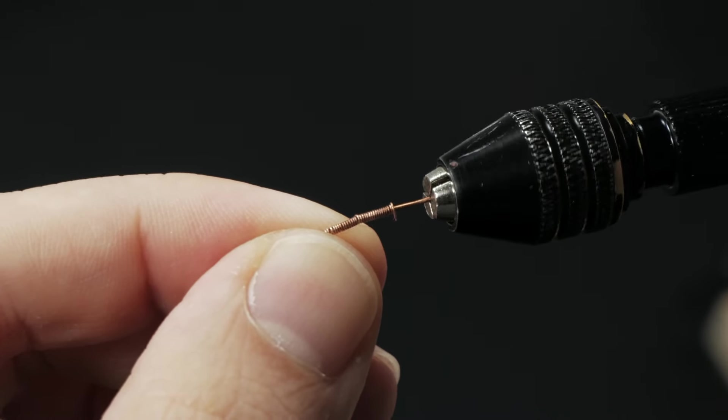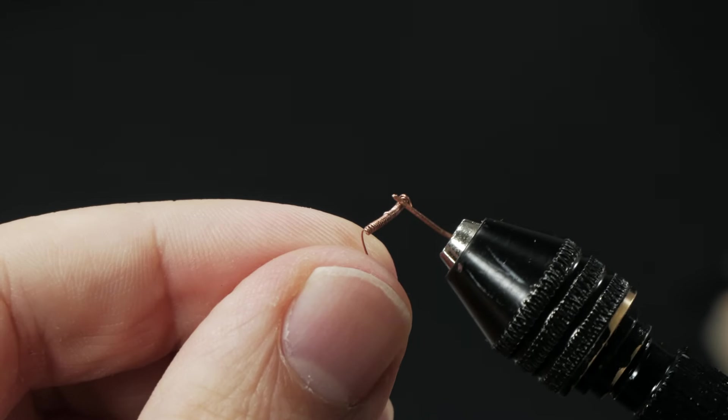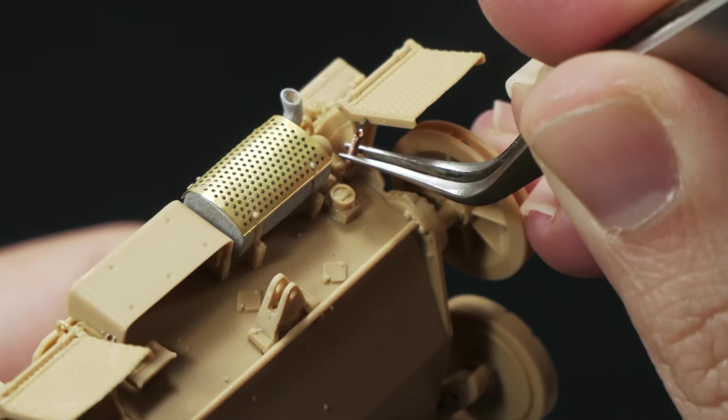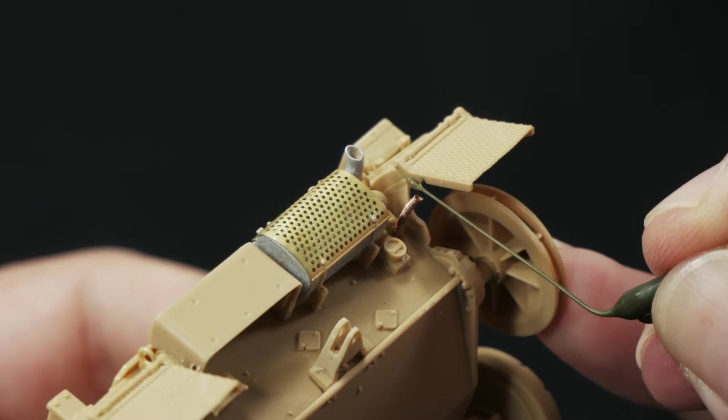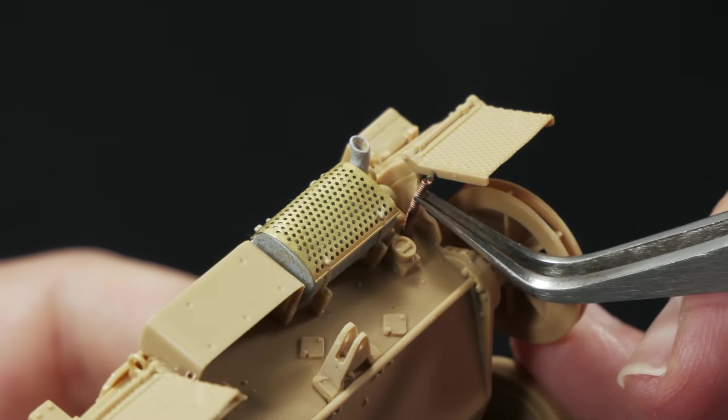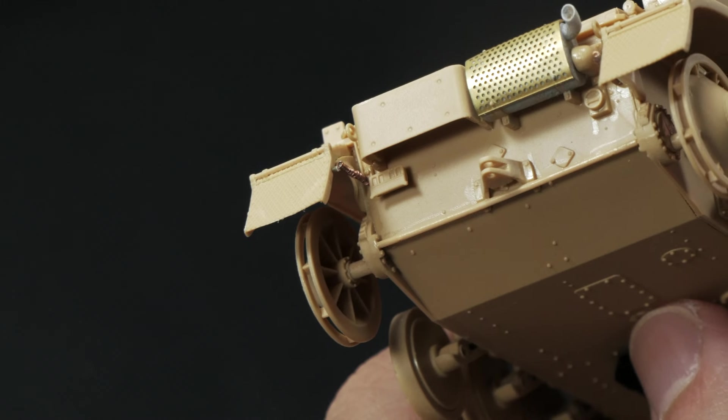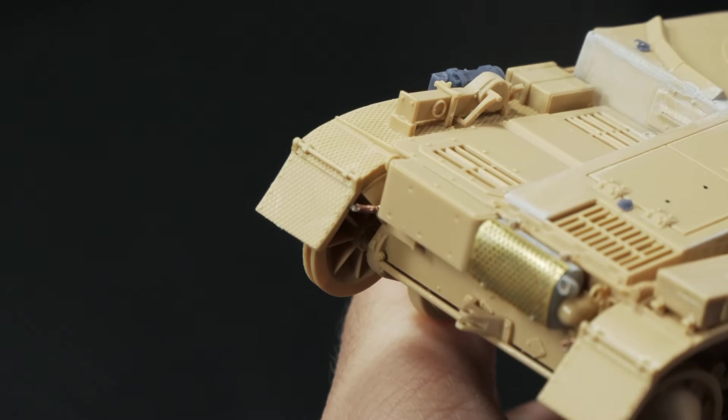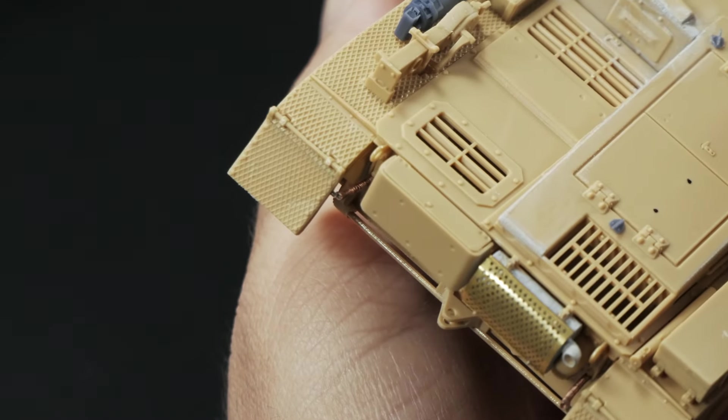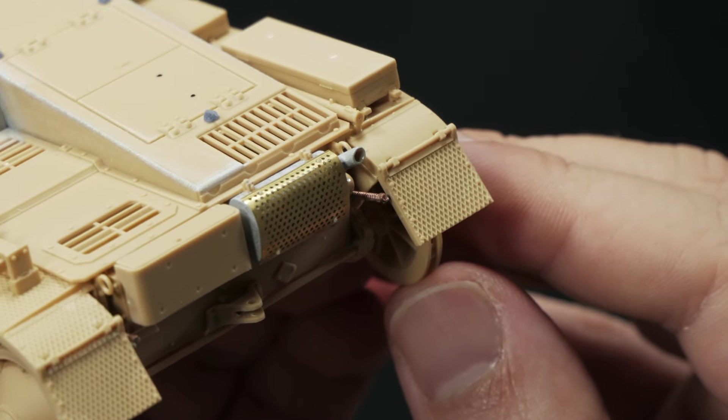Using first an appropriate copper wire as a guide, and later using another with the correct diameter, I quickly represented the metal spring. This technique becomes super useful for representing spiral shaped pieces. Check how they look once in place. There's no possible comparison between the homemade version and the plastic ones.